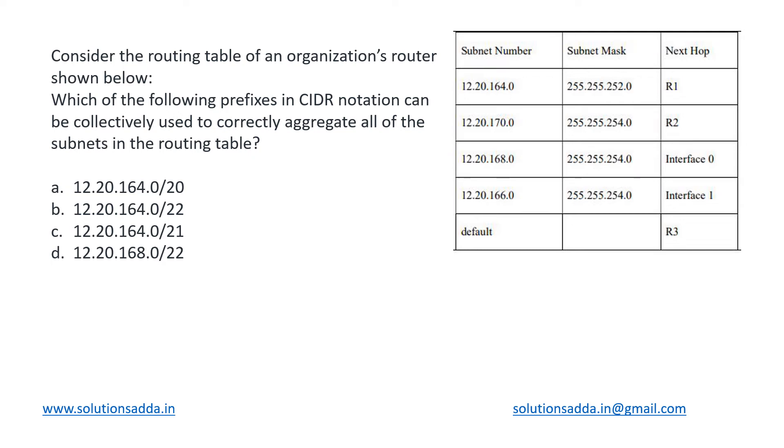This is a networks question based on IP addressing. We have been given the routing table of an organization with subnet number, subnet mask, and next hop for each subnet. The question asks which of the following prefixes in CIDR notation can collectively be used to aggregate all of the subnets in the routing table. Basically, they're asking how we can combine all these subnets together—supernet them—in such a way that we can use a single CIDR notation for all of them, meaning some address with slash notation that will include all of them together.